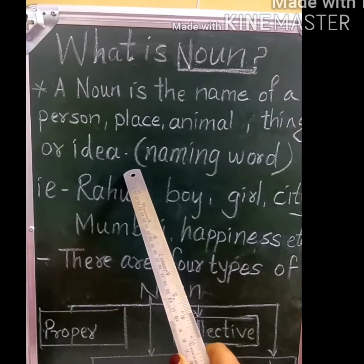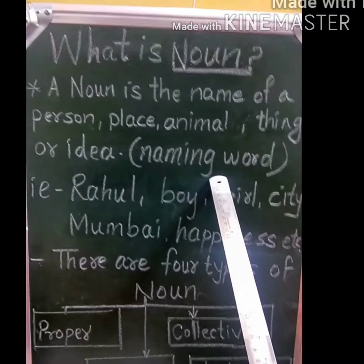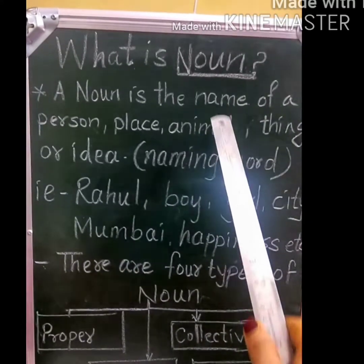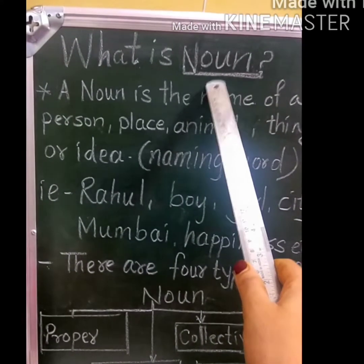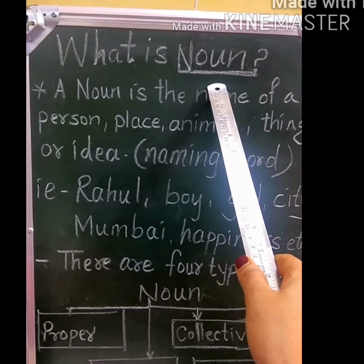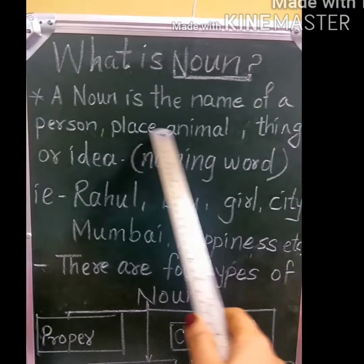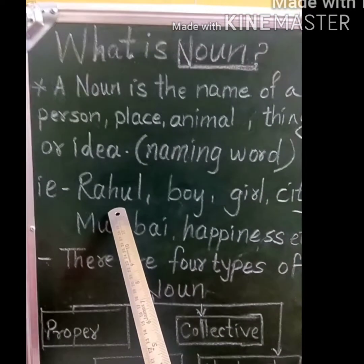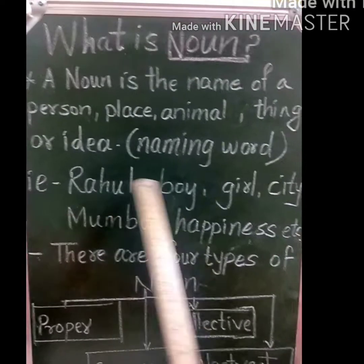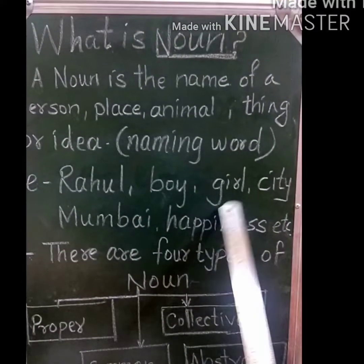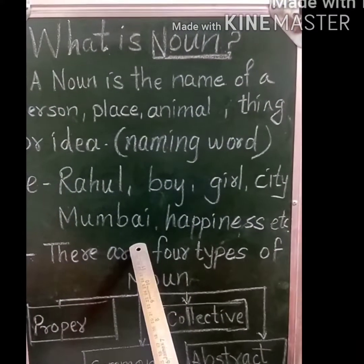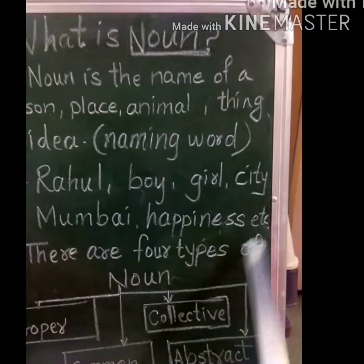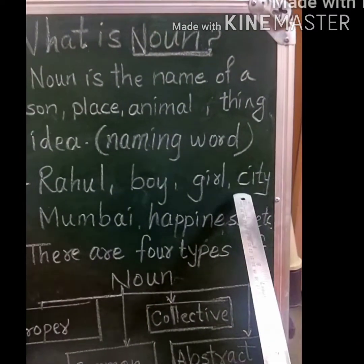Around you, you can see many things and everything has its own name. So, just remember: noun means name — name of a person, place, animal, thing or idea. For example, Rahul, boy, girl, city, Mumbai, happiness, etc. These all are examples of noun.